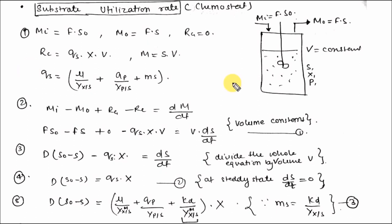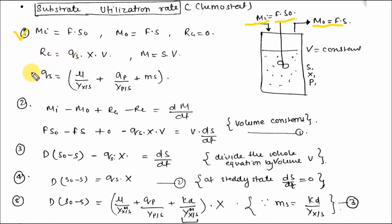Now let's discuss substrate utilization in the chemostat. There is continuous feeding of substrate and continuous removal. MI equals F times S_naught (initial substrate concentration) and MO equals F times S. Flow rate is the same for input and output; volume is constant. Calculate the various parameters MI, MO, RG, RC, Q_S times V, including terms for biomass production, product formation, and maintenance coefficient.